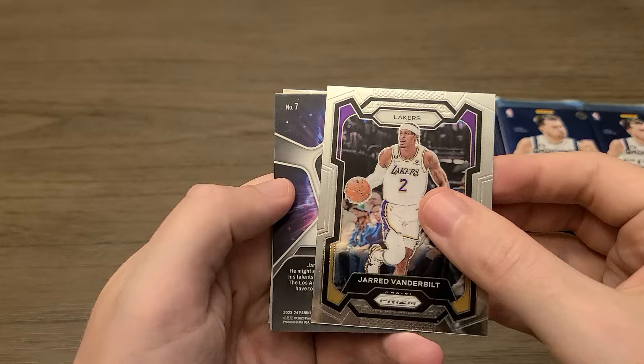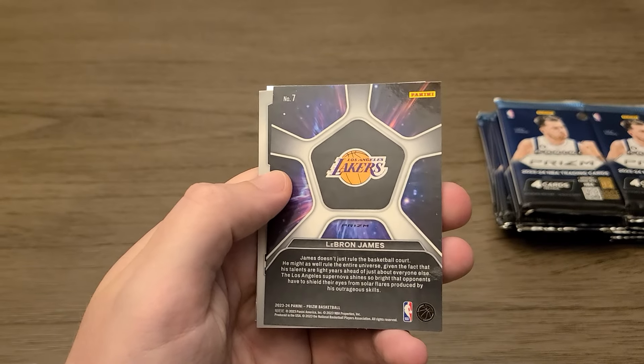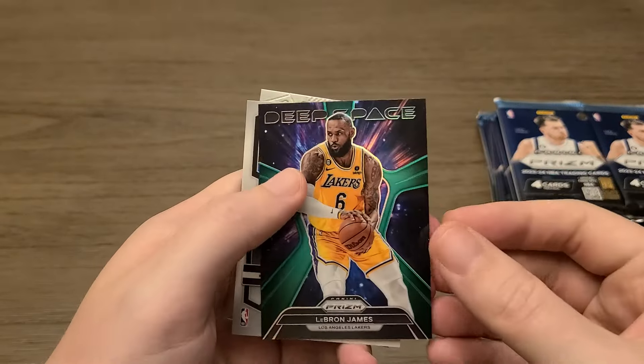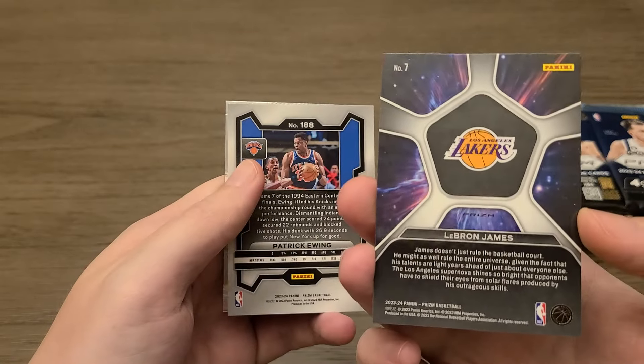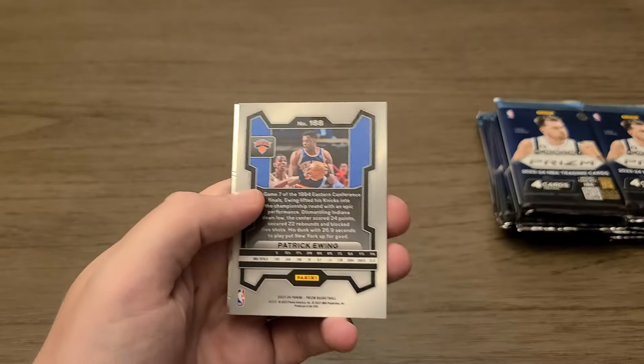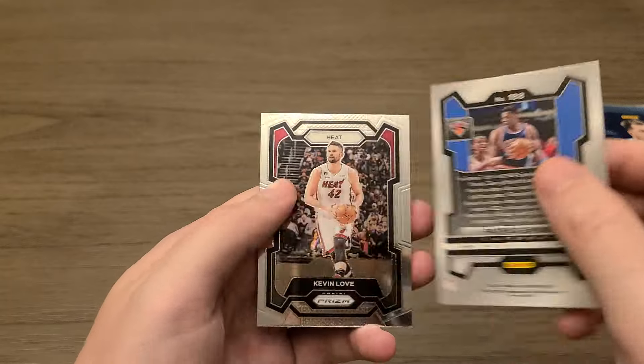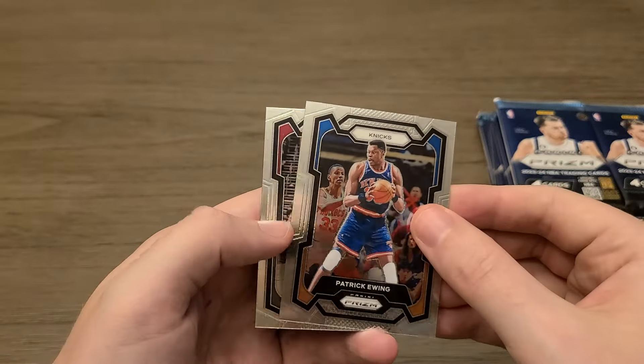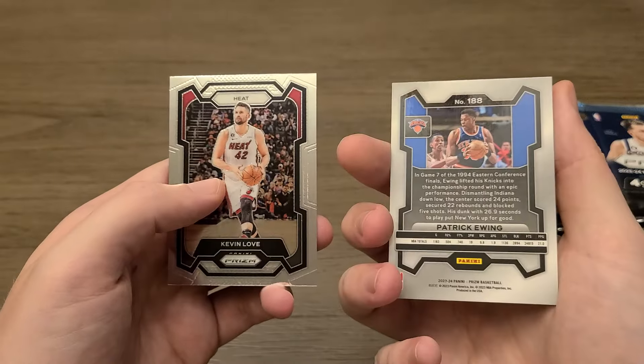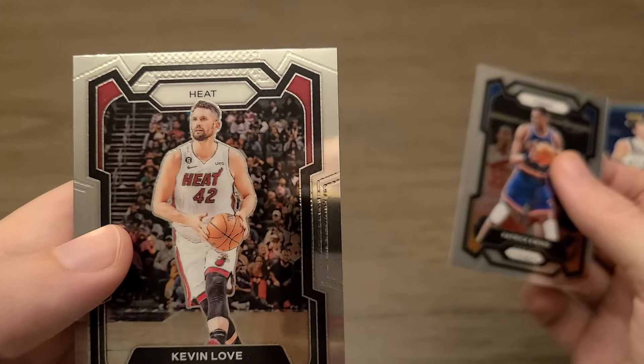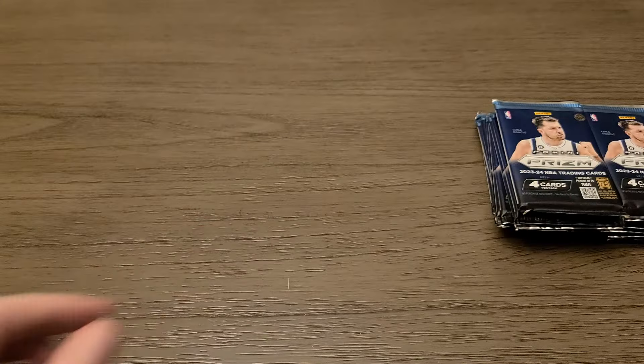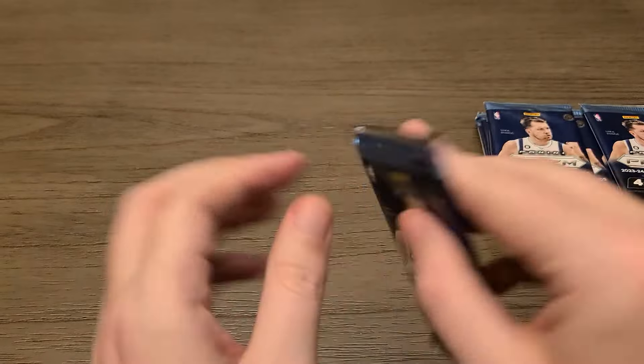Jared Vanderbilt. Another LeBron James. This one's an insert. Deep Space. I don't know what the big hits are in this. I don't know if this is like a big insert or not. But hey, that's a pretty cool card. And Patrick Ewing. Just a base, not a Silver Prism or anything. And then Kevin Love. That looked a little bit different.